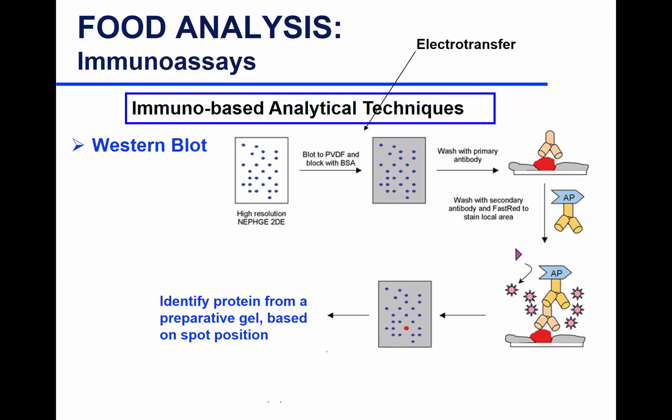Western blot is another form of immunoassay based on antigen-antibody interaction. In this case, it's more qualitative and useful for screening. You can screen a lot of different proteins in a mixture and figure out which ones are reactive — separate them and detect which one is the antigen.